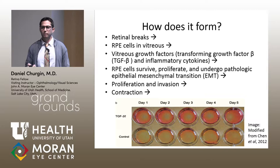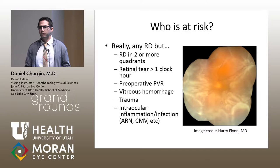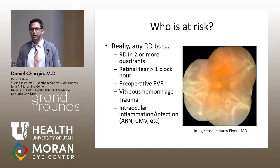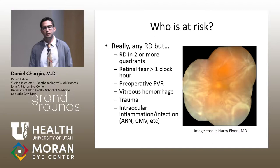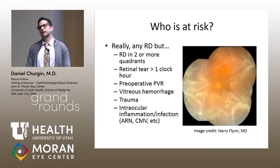Who's at risk for PVR? Practically speaking, I've seen PVR happen in eyes I never thought would get it. But the classic risk factors are extensive retinal detachment, large retinal tears especially giant retinal tears, preoperative PVR, vitreous hemorrhage with retinal detachment, intraocular hemorrhage during or after retinal surgery, trauma, and intraocular inflammation or infection. Specifically, patients with CMV, ARN, and PORN are very much at risk for this.